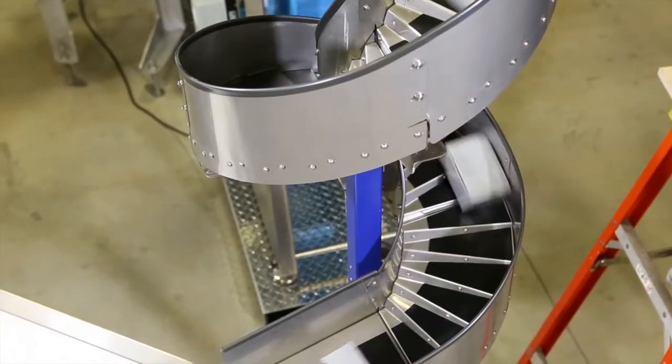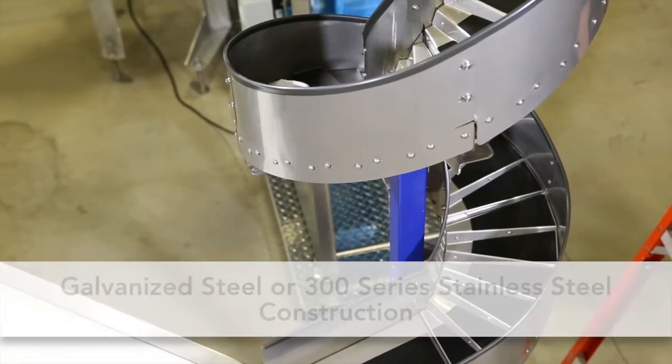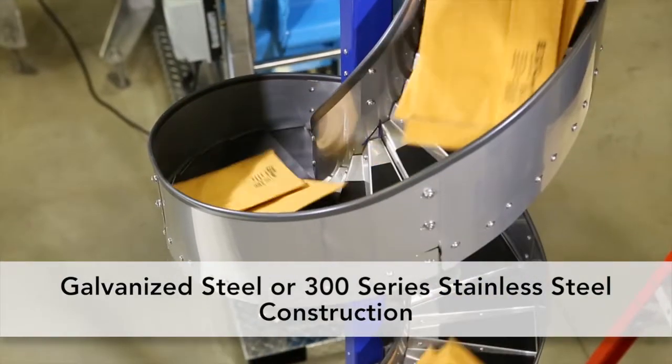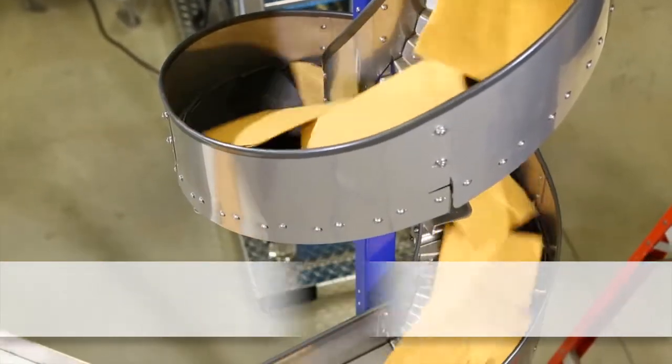Dorner's spiral chutes feature bolt-together construction and are available in either galvanized steel with plated fasteners or No. 4 Polish 300 Series Stainless Steel with stainless fasteners.